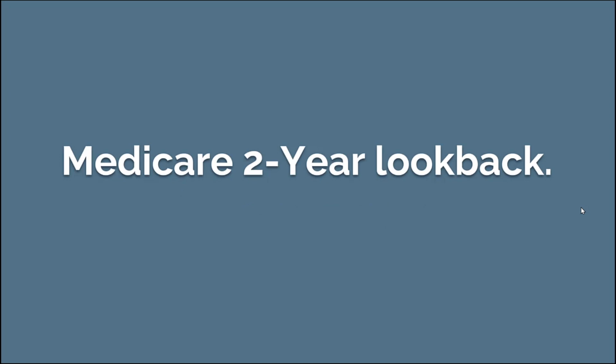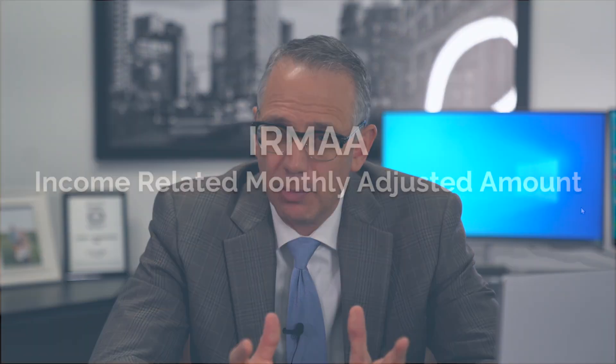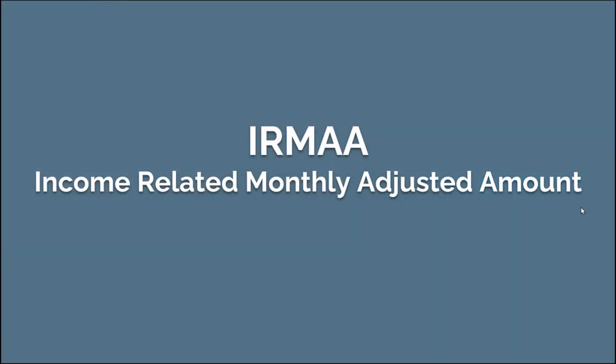A really important thing to understand is that Medicare has a two-year look back. So when you are age 63, that year — the year that you're 63 — whatever your tax return is, that's what's going to be used to determine your Medicare premiums at age 65, two years later. They're always looking at your modified adjusted gross income from two years ago. And so if your modified adjusted gross income crosses the thresholds, then you're going to have IRMAA — Income Related Monthly Adjusted Amount.